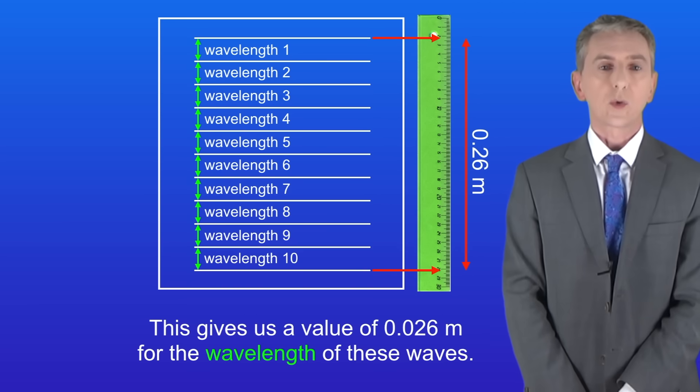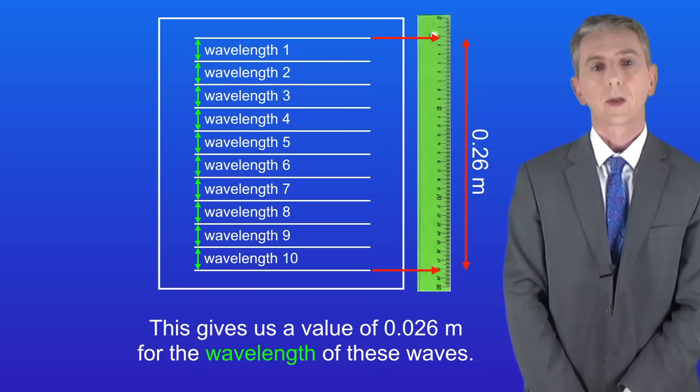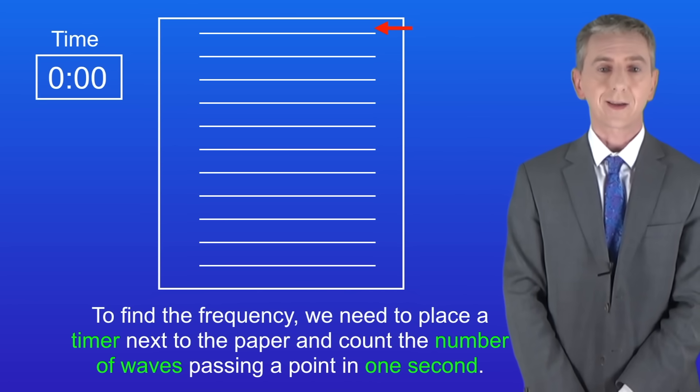Finding the frequency is a bit harder. Remember that the frequency is the number of waves passing a point each second. To find the frequency we need to place a timer next to the paper and then count the number of waves passing a point in one second.